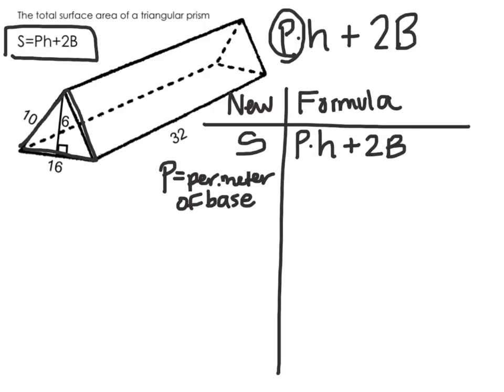Now it's a triangular prism, so my base is a triangle. My perimeter of this triangle is 10 plus 10 plus 16, which is 36. So in place of my capital P I'm going to put a 36.